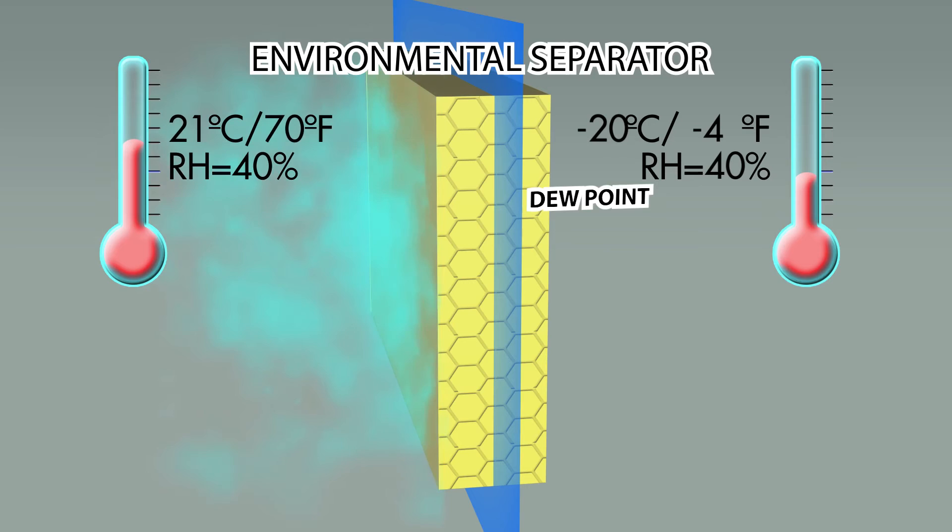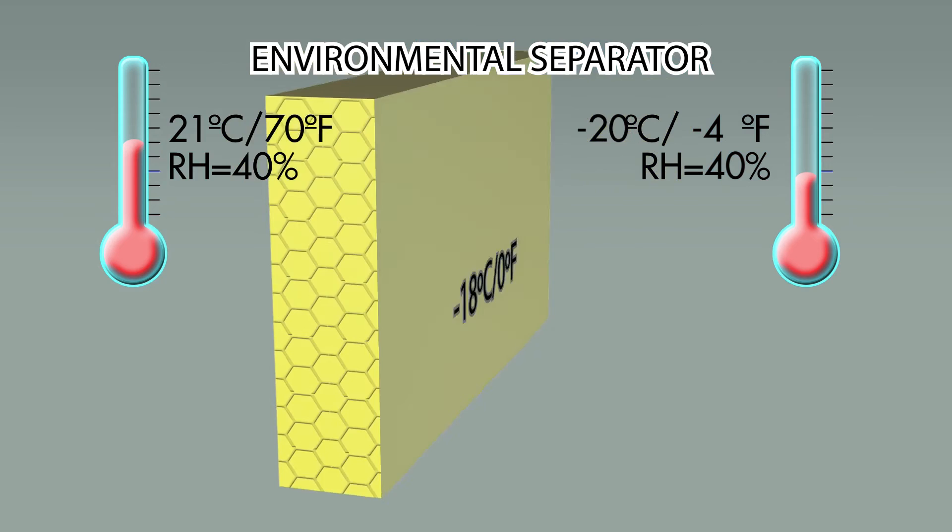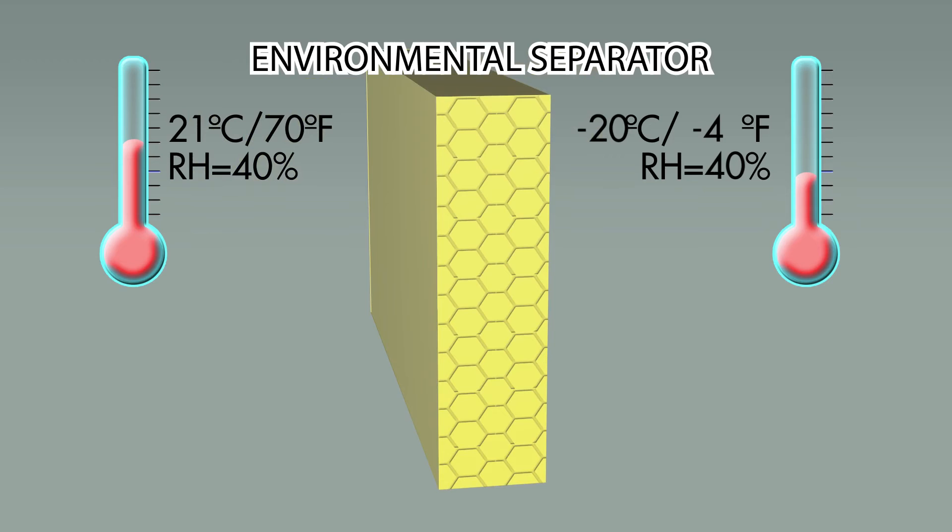Note that instead of using common vapor barriers that control the flow of moisture in wall assemblies, this method prevents moisture from dispersing through the insulation, eliminating the dew point entirely. Because the surface in contact with the vapors is no longer a condensation plane, condensation is completely prevented.